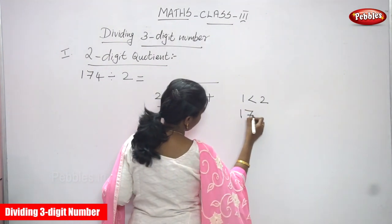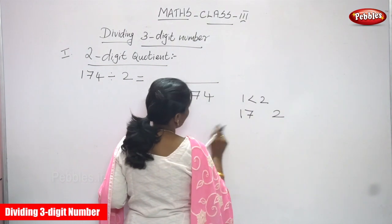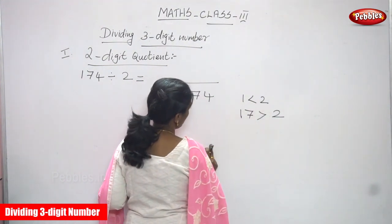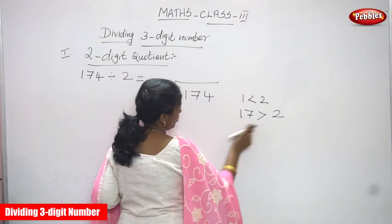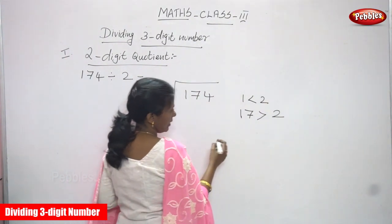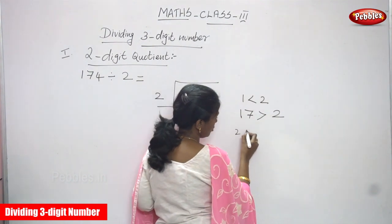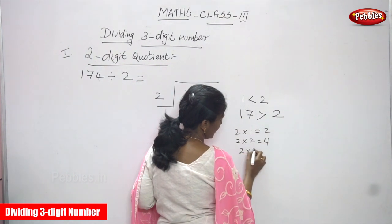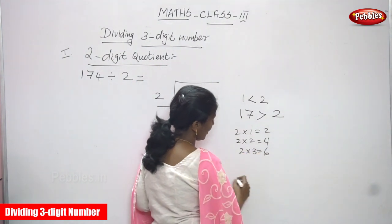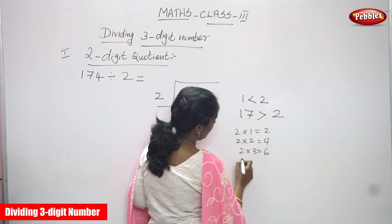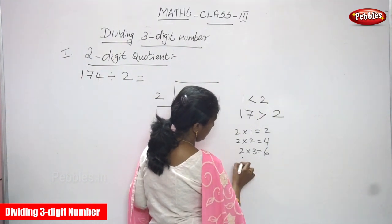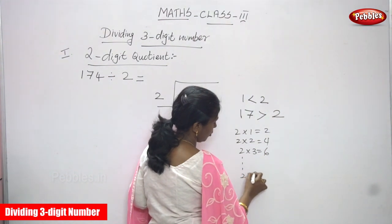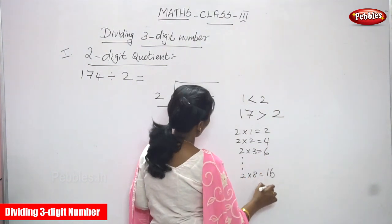17 is the dividend and 2 is the divisor. 17 is greater than 2, so it is enough to divide now. You must use the two-times table. 2 ones are 2, 2 twos are 4, 2 threes are 6 — likewise up to 2 eights are 16. You must stop at a number less than the dividend.